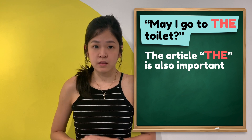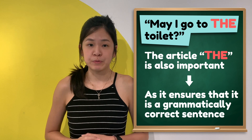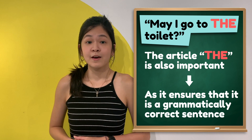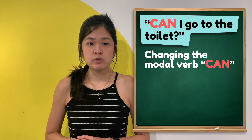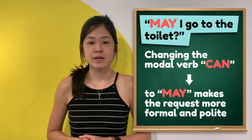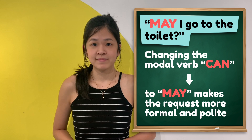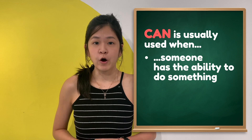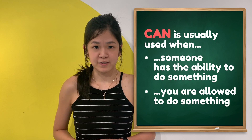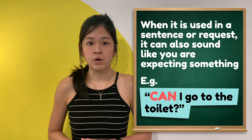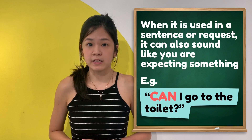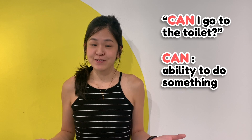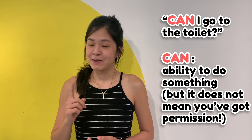The article 'the' is also important to ensure that it is a grammatically correct sentence. Furthermore, changing the modal verb 'can' to 'may' makes the request sound more formal and polite. 'Can' is usually used when you have the ability to do something or when you are allowed to do something. When it is used in a request, it can also sound like you are expecting something. 'Can I go to the toilet?' — 'Yes, you can. You can go to the toilet by walking there yourself.'